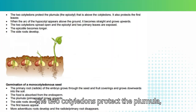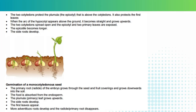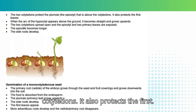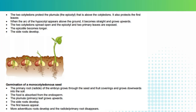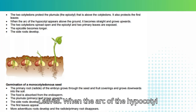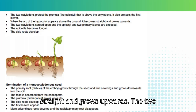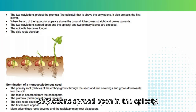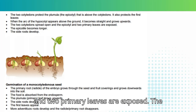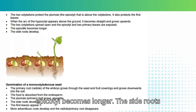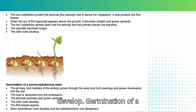The two cotyledons protect the plumule and the epicotyl — that is above the cotyledons — and also protect the first leaves. When the arc of the hypocotyl appears above the ground, it becomes straight and grows upwards. The two cotyledons spread open and two primary leaves are exposed. The hypocotyl becomes longer and the side roots develop.